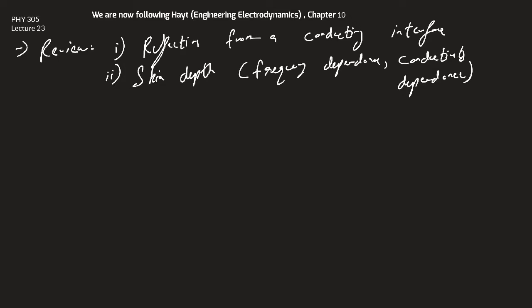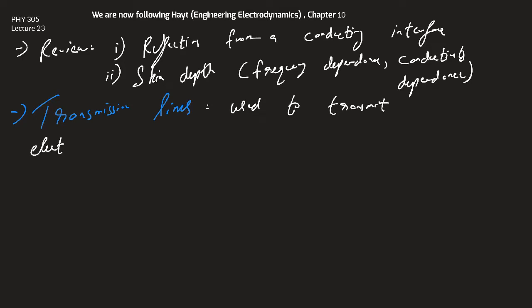Starting from today, and this will form a significant part of the remaining course, we want to start transmission lines. This will be a rather subtle introduction, and what I will try to do is link everything we have done before to our study of transmission lines. A transmission line is basically something used to transmit electrical energy and signals from a source to a receiver.